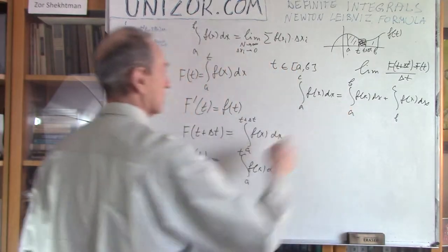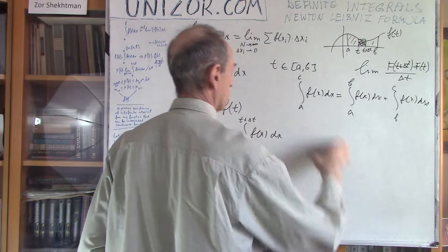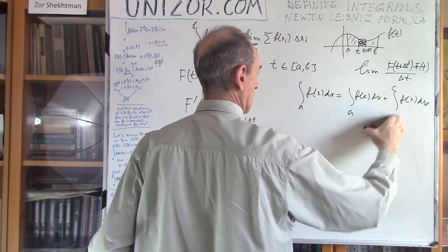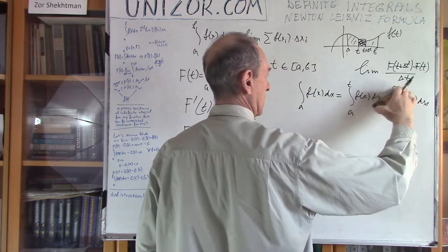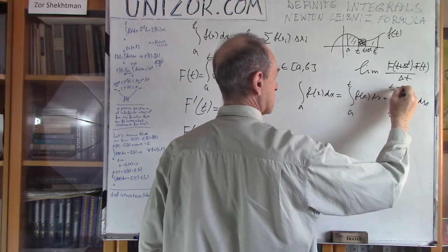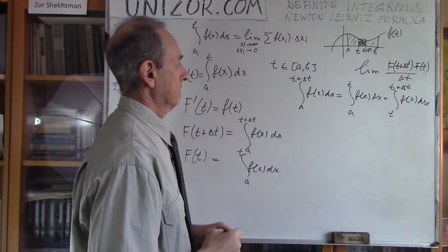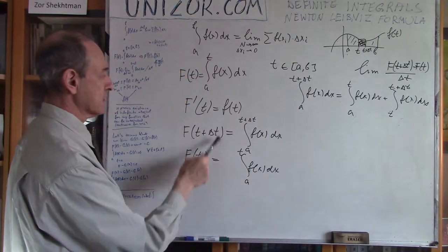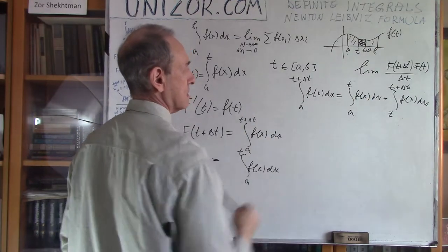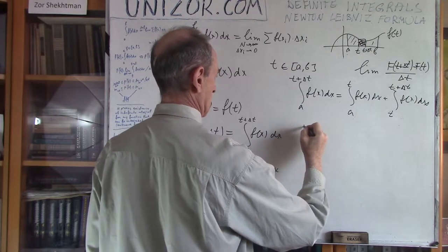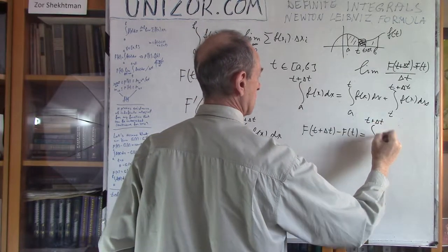I will use this property, where my point c is t+Δt and my point b is t. So: first we integrate from a to t, then from t to t+Δt, and that equals integrating from a to t+Δt all the way. From this it follows that the difference — the numerator — equals the integral from t to t+Δt of f(x) dx.